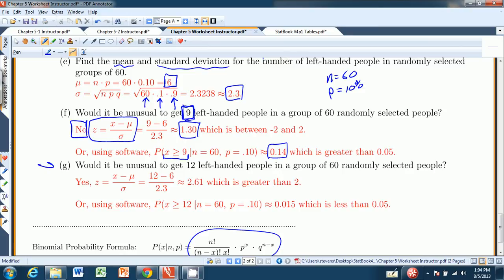And again, we're expecting 6 lefties. What about 12? Would 12 be considered an unusual number of lefties? Well, again, we can use the same z-score method. Now x is 12. 12 minus 6 over 2.3 is 2.61. That is bigger than 2. So that makes 12 an unusual number of lefties. And you can also do the actual binomial probability. The probability of getting 12 or more using software, or your TI calculator, or any calculator that has these kind of abilities, is 0.015. And 0.015 is smaller than 0.05. So the probability of 12 or more is less than 0.05. That makes 12 unusually large.